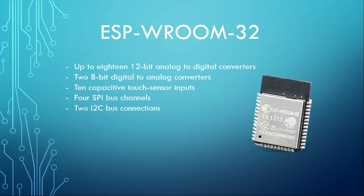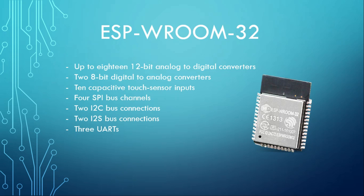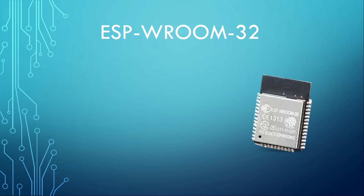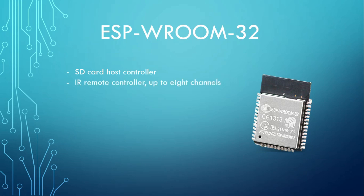It has two I2C bus connections and also an I2S bus connection — this is a bus that can carry audio. It also contains three UARTs for serial communication. The ESP-WROOM-32 can act as an SD card host controller as well as a host controller for other channel devices like MMC. It can also be an IR remote controller for up to eight channels.